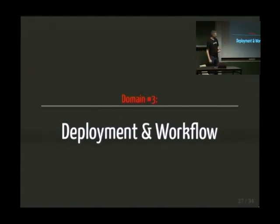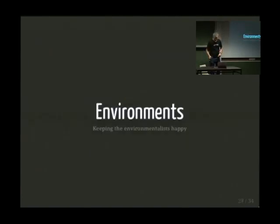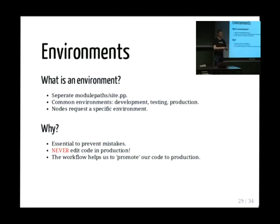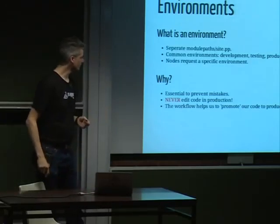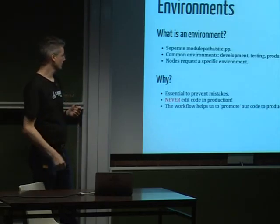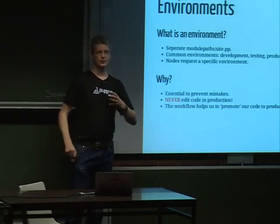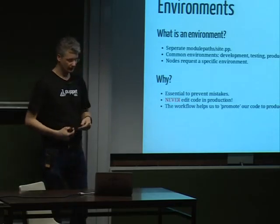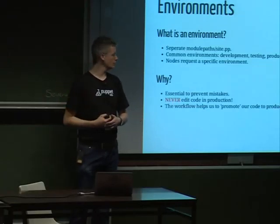Now let's talk about deployment and workflow — I've only got ten minutes left so I'll rush through it. Environments are very needed — they're pretty much nothing more than a separate module path and a site.pp. Usually you'll find development, testing, and production, pointing to different module paths. A node is configured to load a specific environment, which can be overridden in an ENC. You never want to edit any code in production because that's very dangerous. The workflow with Git Flow helps you promote code to production safely.